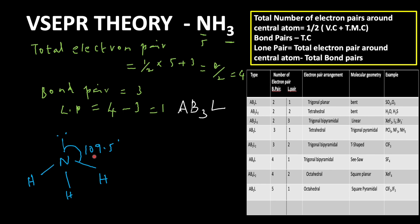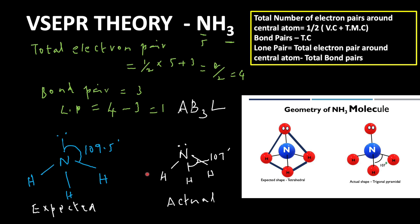Theoretically, the bond angle should be 109.5° for a tetrahedral molecular shape, but due to the lone pair electron — since lone pair–bond pair repulsion is greater than bond pair–bond pair repulsion — the N–H bond angle is reduced to 107°, resulting in the formation of a trigonal pyramidal shape. So the expected shape is tetrahedral, but the actual shape is trigonal pyramidal.